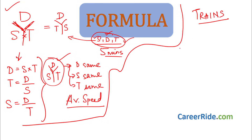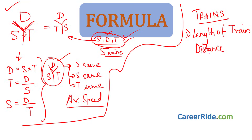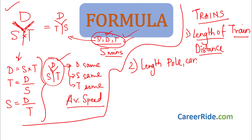Problems on trains are very, very similar to the speed, distance, time concept. There are only three small things you need to remember. First, you should include the length of the train in the distance traveled. Secondly, the length of a pole, man or a car is always taken as 0 — unless their length is specifically mentioned. And the third one is relative speed.